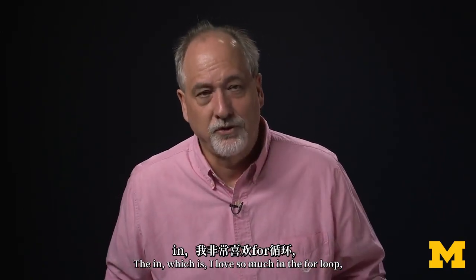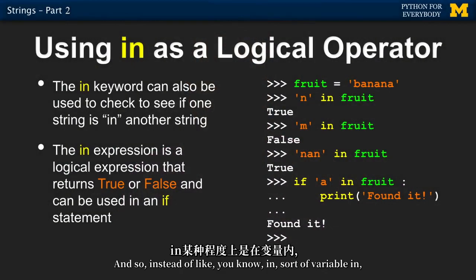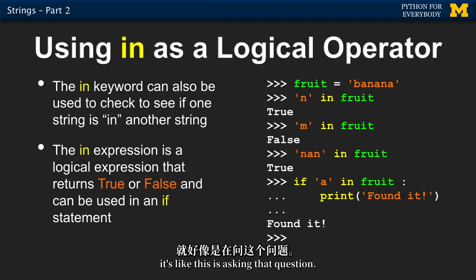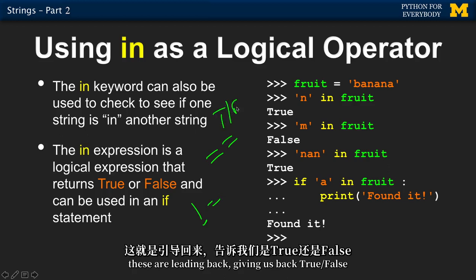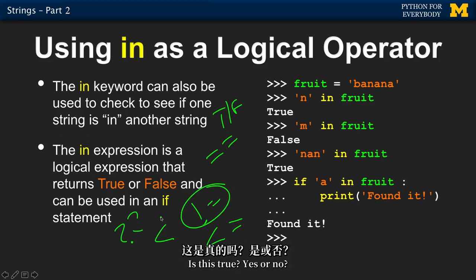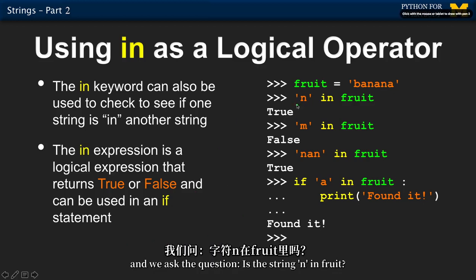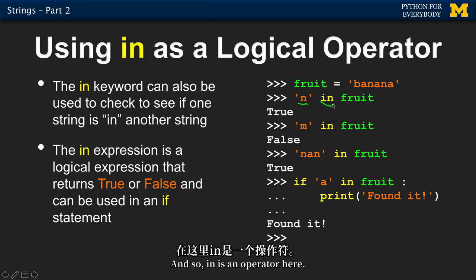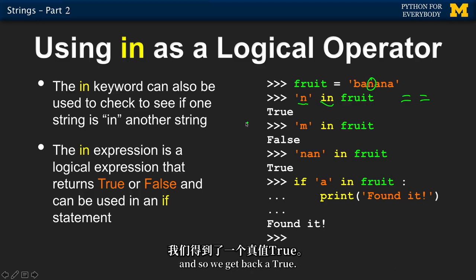The `in` operator, which I love in the for loop, is also usable as a logical operator. The expression is a little different — instead of variable in something, it's asking a question, much like double equals, not equals, less than, or less than or equals. These all return true or false. We use them in if statements. So here we make the variable fruit and ask: is the string 'n' in fruit? And the answer is yes, there is an n there, so we get back true.